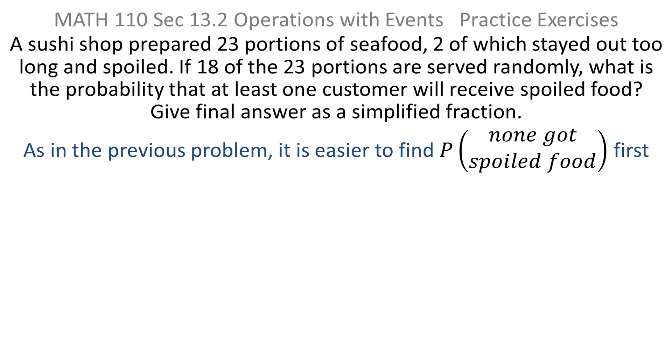This is very similar to the last problem, except they didn't give you the hint. But the strategy is still the same. It's easier to find the probability that none got spoiled food than it is to find the probability that at least one got spoiled food. So first of all, let's find the probability that no one got spoiled food. And then we can use the complement rule as we did in the previous problem.